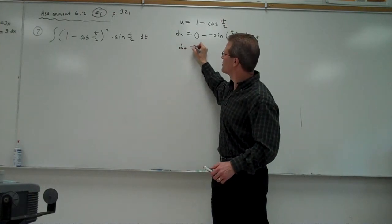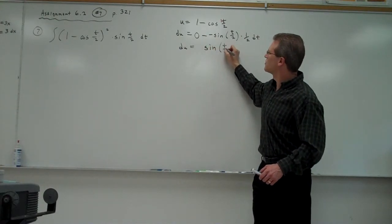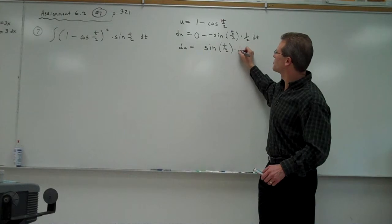So my du ends up being a negative of a negative. So that's going to be positive sine of t over 2 times 1 half dt.